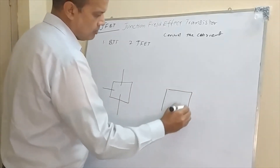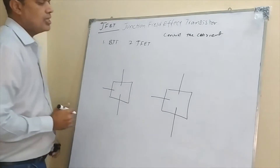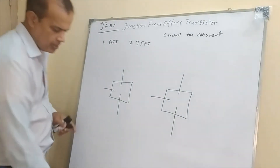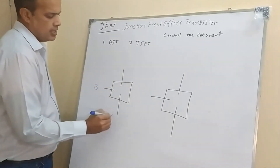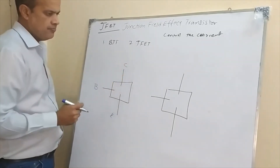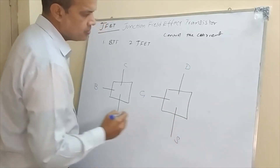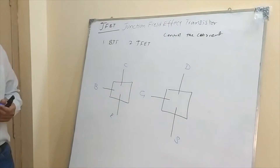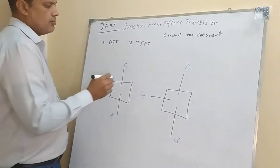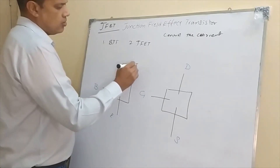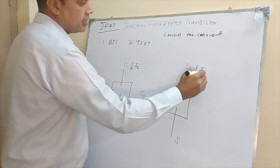Whether we are considering the BJT or talking about the JFET, both devices consist of three terminals. For the BJT, we have a base, emitter, and collector. For the JFET, we have the gate, drain, and source. When we talk about the BJT, the output current is called the collector current, and in the JFET, the output current is called the drain current.